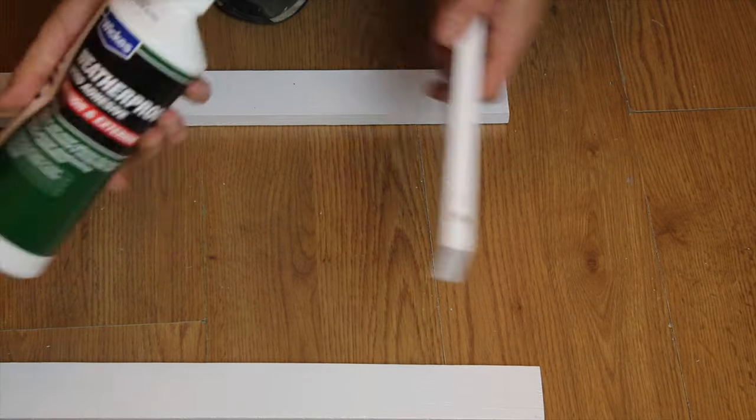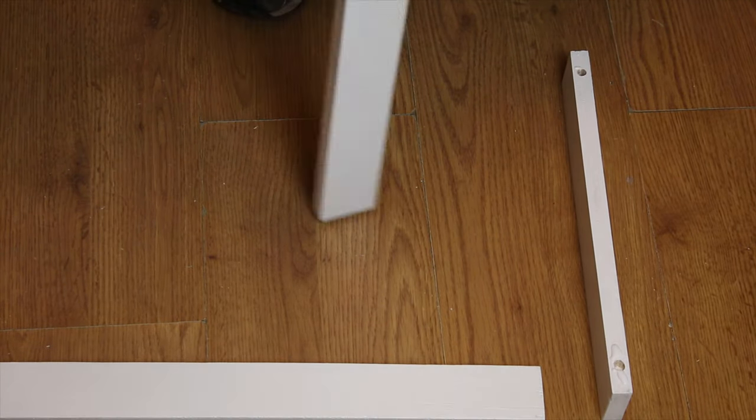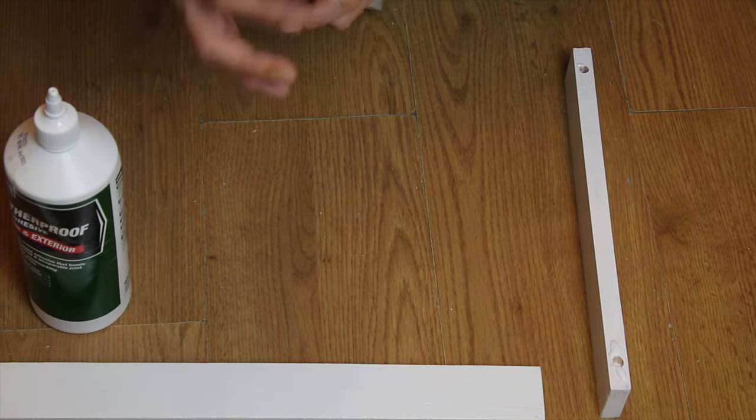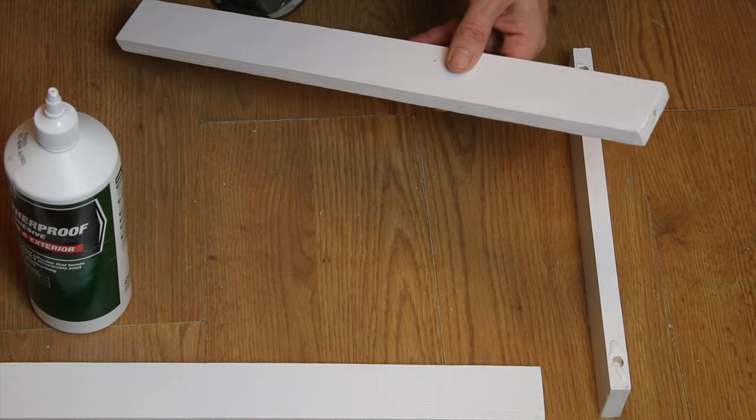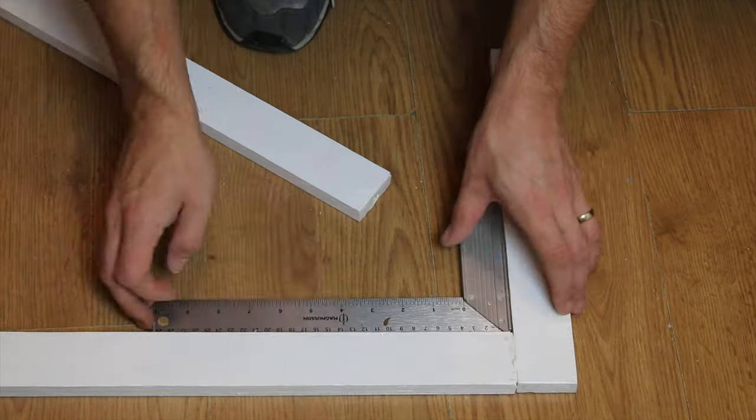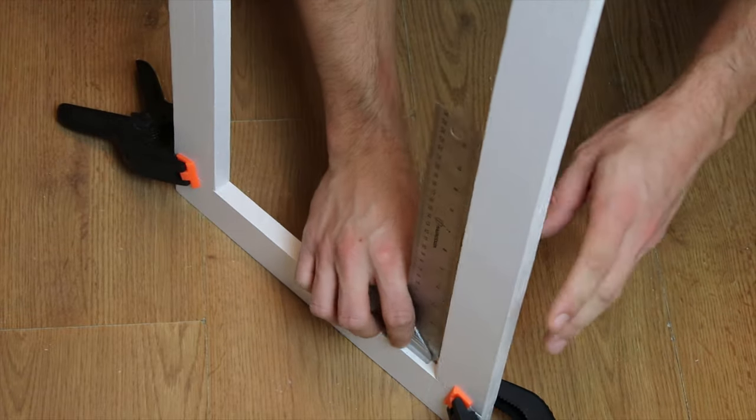I used wood glue and dowels to build the frames for the doors and the shoe cabinet. Then I checked the angle and clamped them in the correct position until the glue sets.